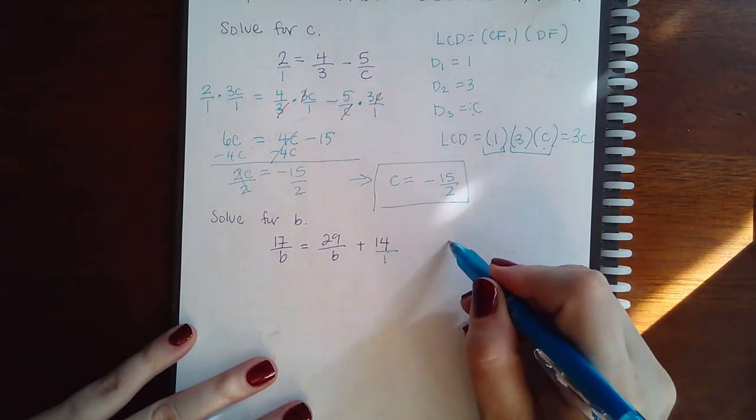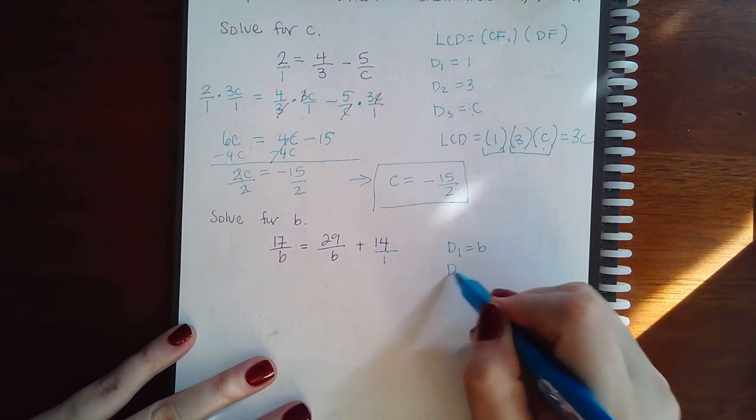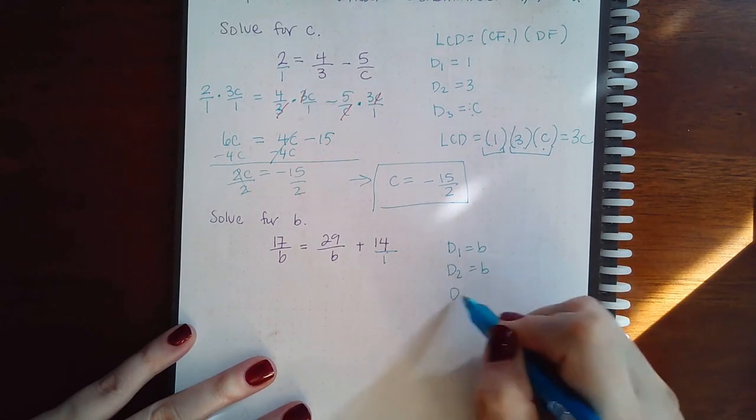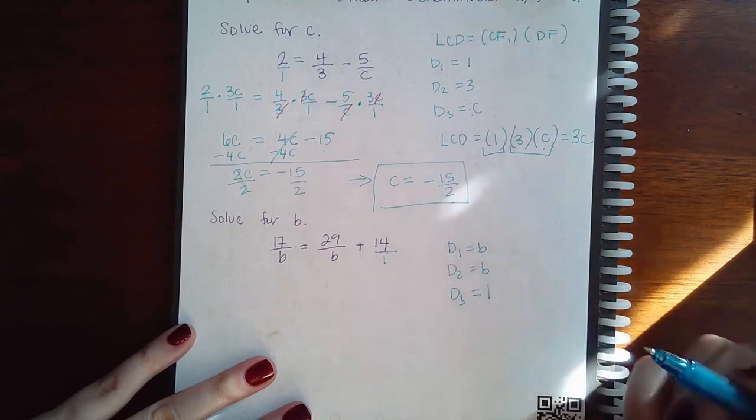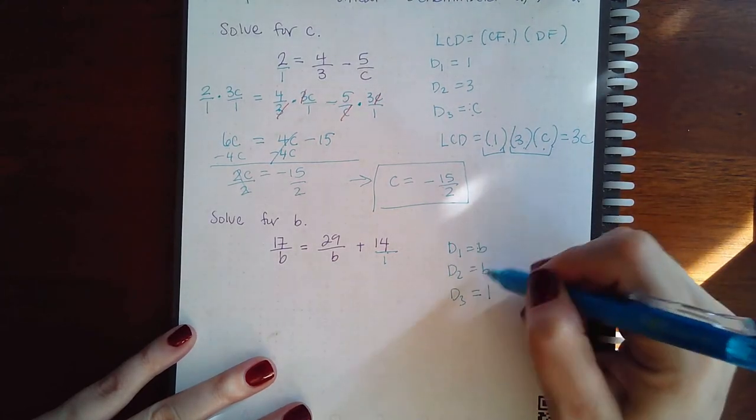And then we've got the denominator 1 is B. Denominator 2 is B. Denominator 3 is 1. You can think of these as 1B if you want to.